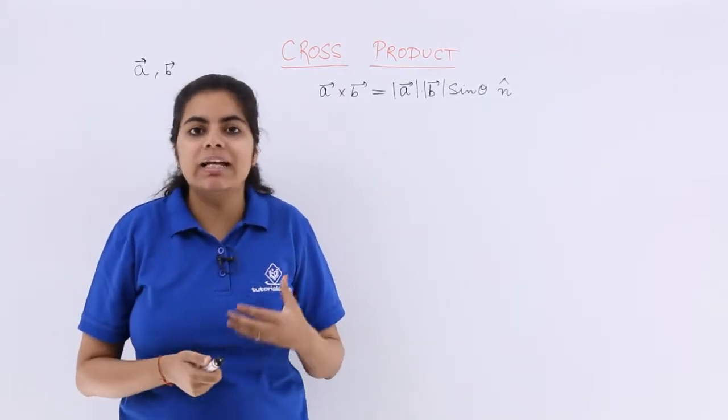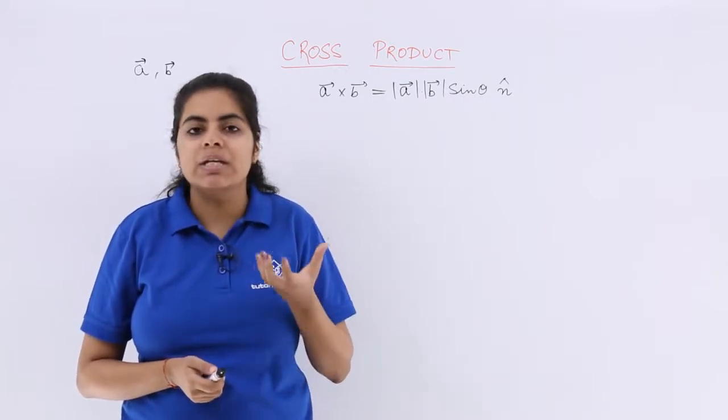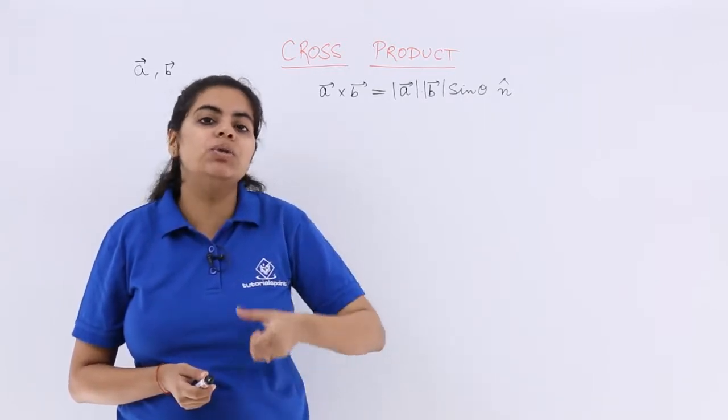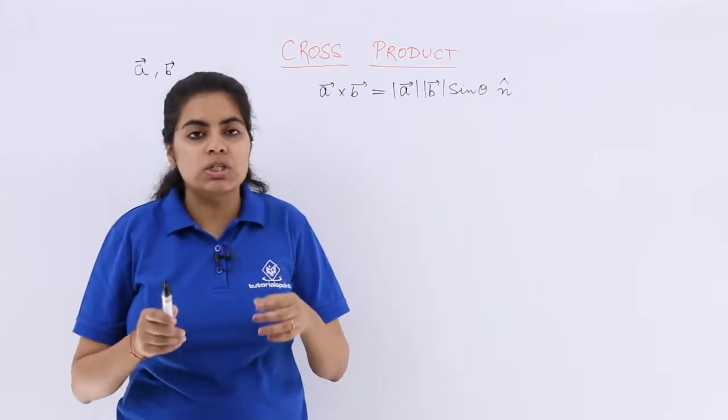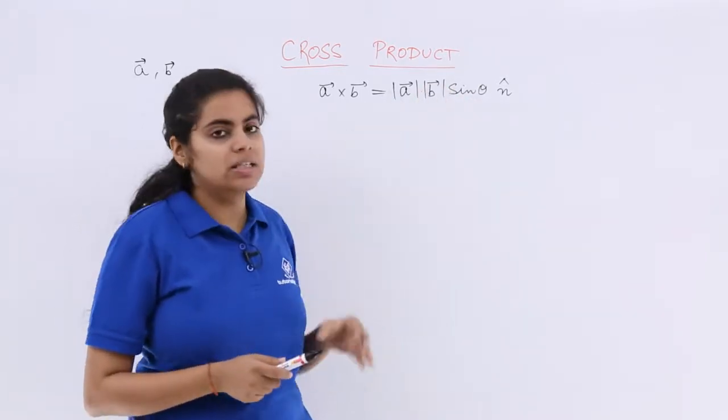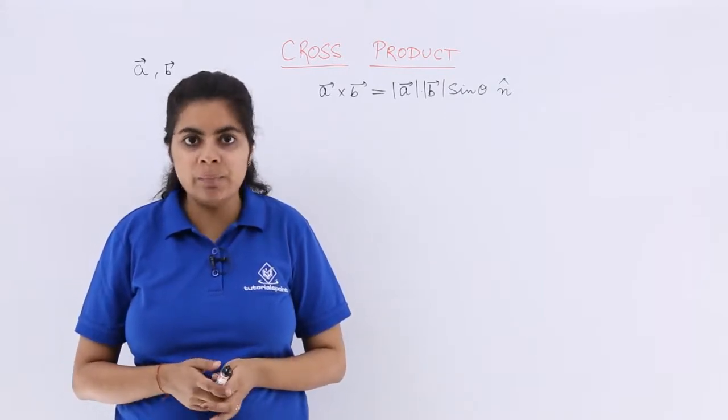And it is such that the theta or the angle is basically perpendicular to the plane in which the a and b vector lie. So a, b and theta, these constitute a right-handed system.